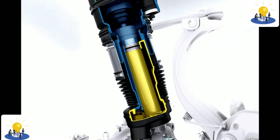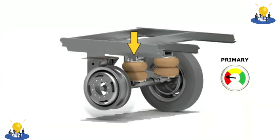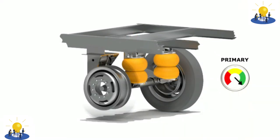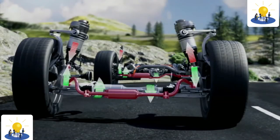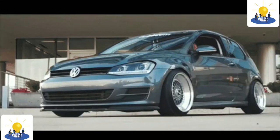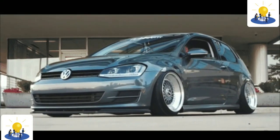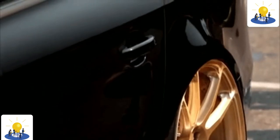In 2014, the new C217 S-Class Coupe introduced an update to Magic Body Control called Active Curve Tilting. This new system allows the vehicle to lean up to 2.5 degrees into a turn, similar to a tilt train. The leaning is intended to counter the effect of centrifugal force on the occupants and is available only on rear-wheel drive models. Over the last decade, air suspension has become popular in the custom automobile culture.